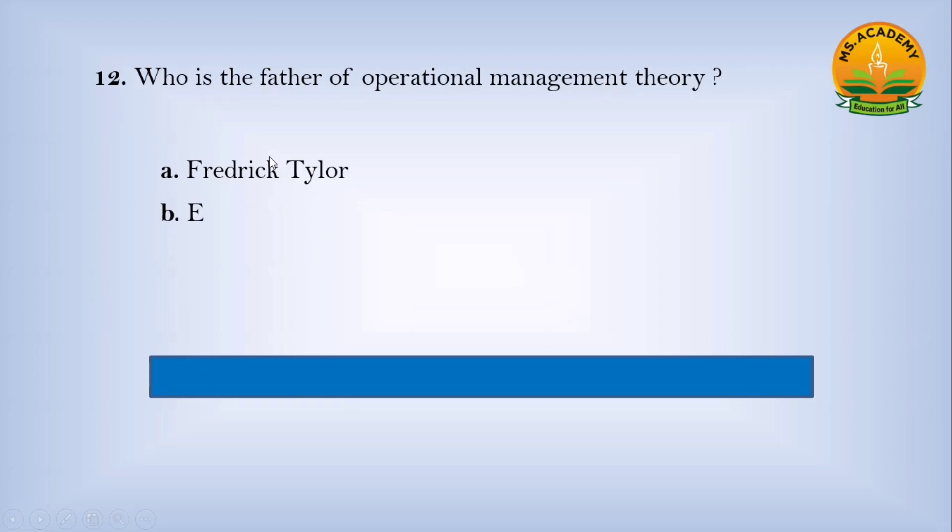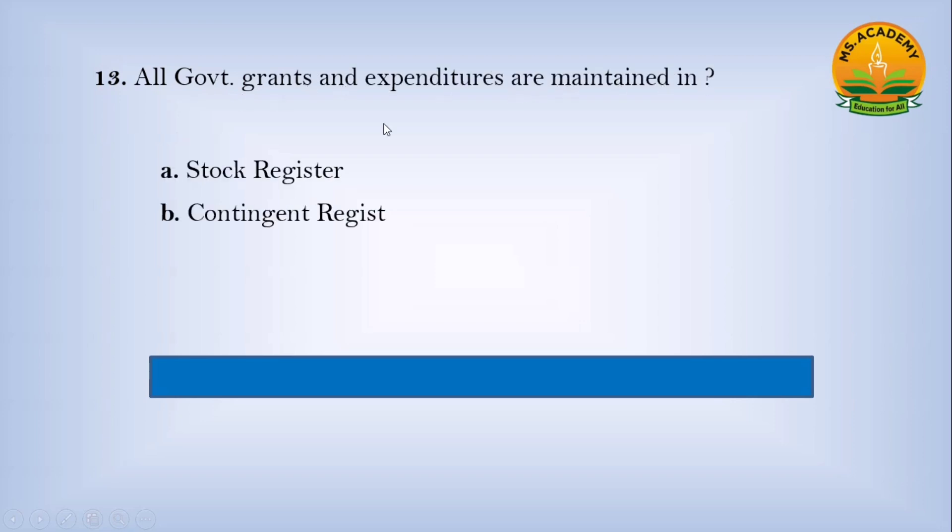All government grants and expenditures are maintained in: Option a) Stock Register, Option b) Contingent Register, Option c) Cash Register. Answer: c - Cash Register.